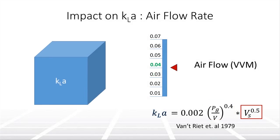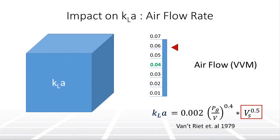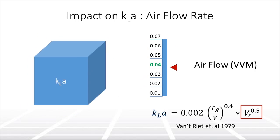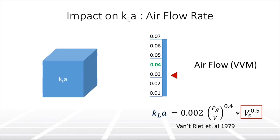Next is air flow rate. As you increase the flow rate of air into the bioreactor, the amount of oxygen in the culture increases. This is known as gas holdup, and as gas holdup increases, KLA increases.